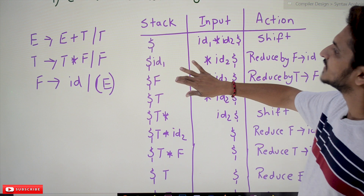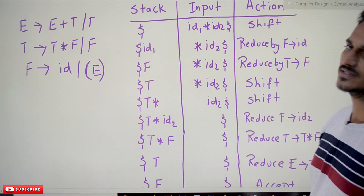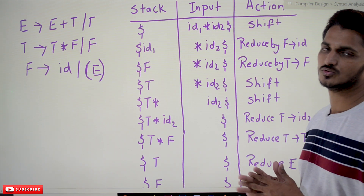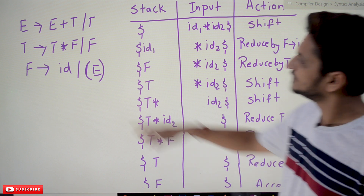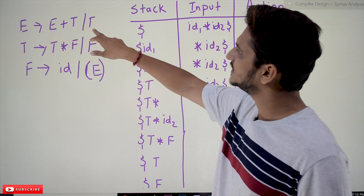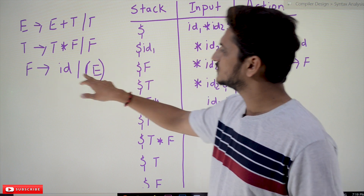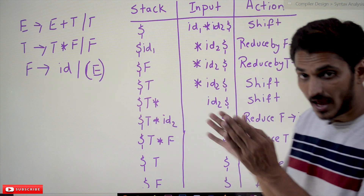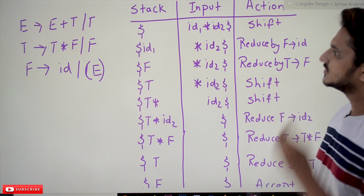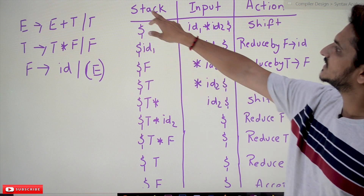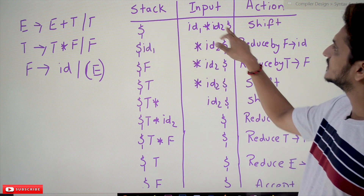Now we will take an example and understand. This is the same example we used in our last class, now shown in the context of shift-reduce parsing. The grammar is: E → E + T | T, T → T * F | F, F → id | (E). Initially the stack consists of the dollar symbol.